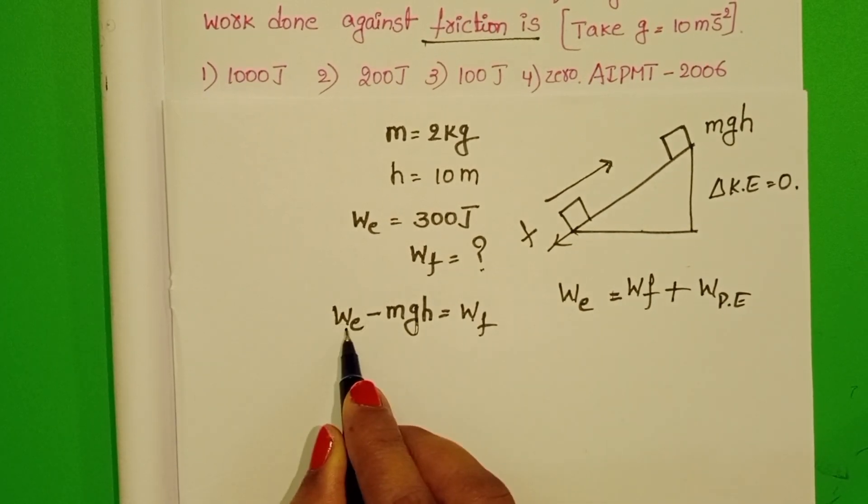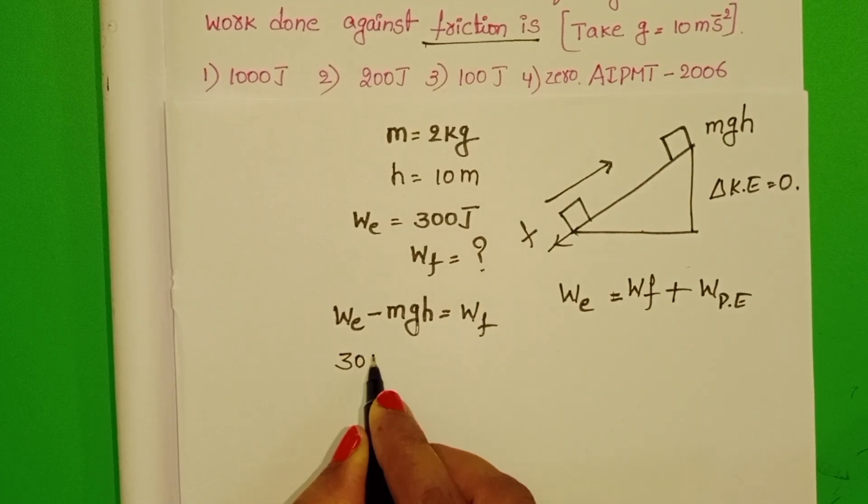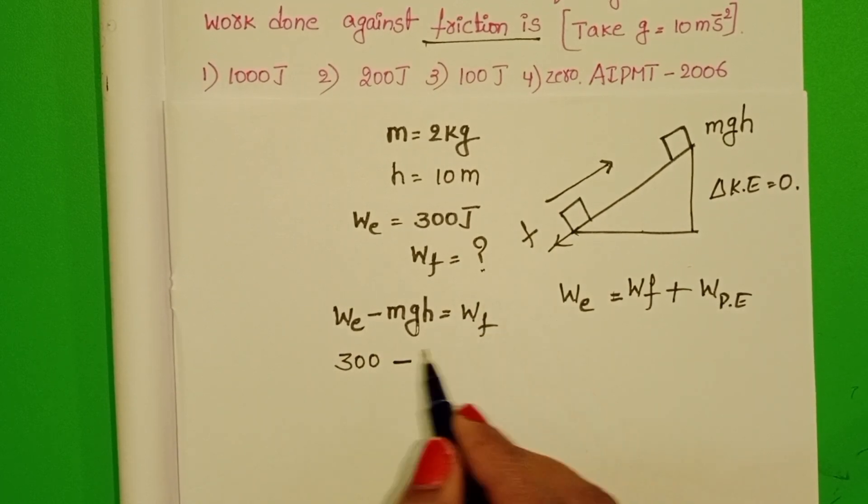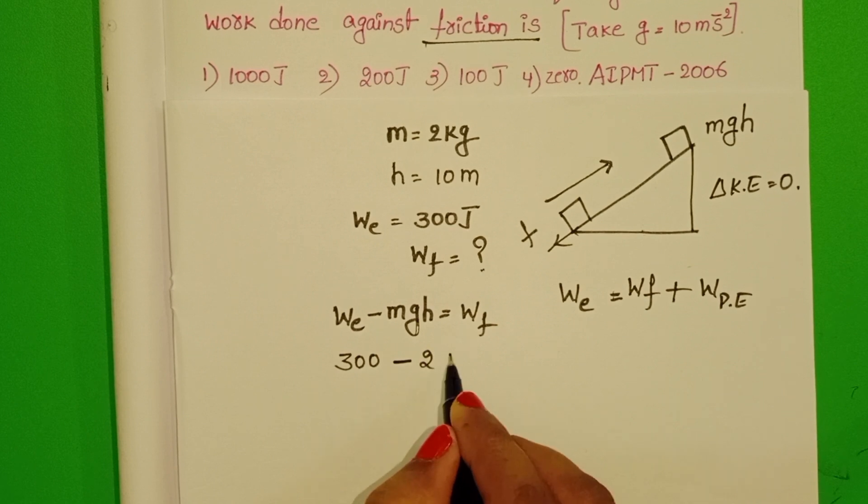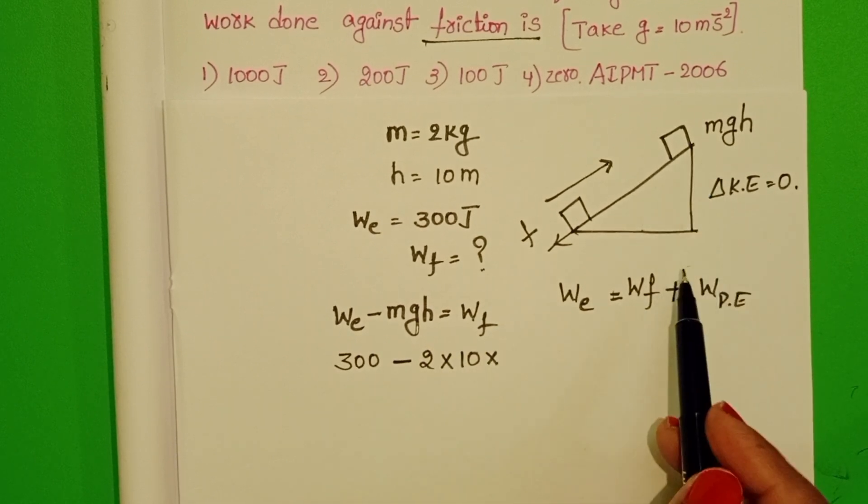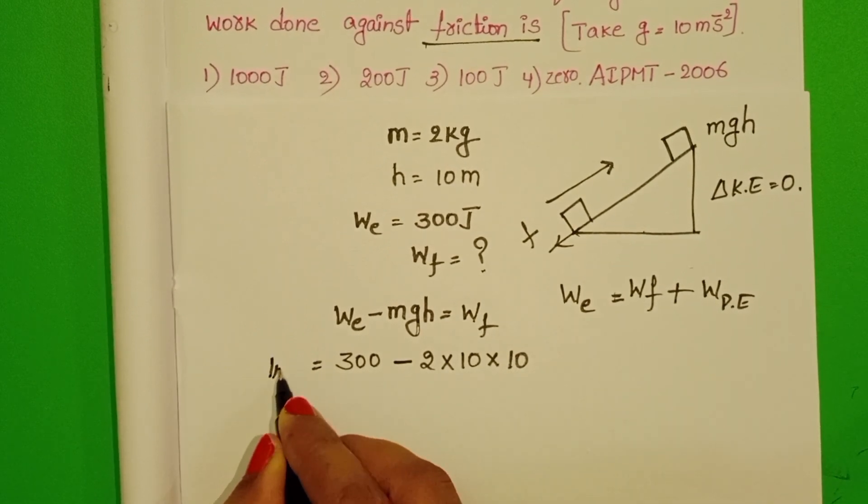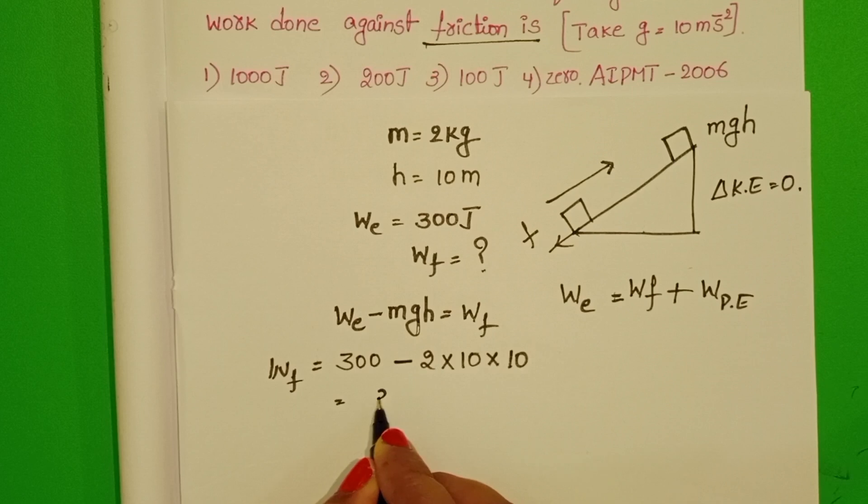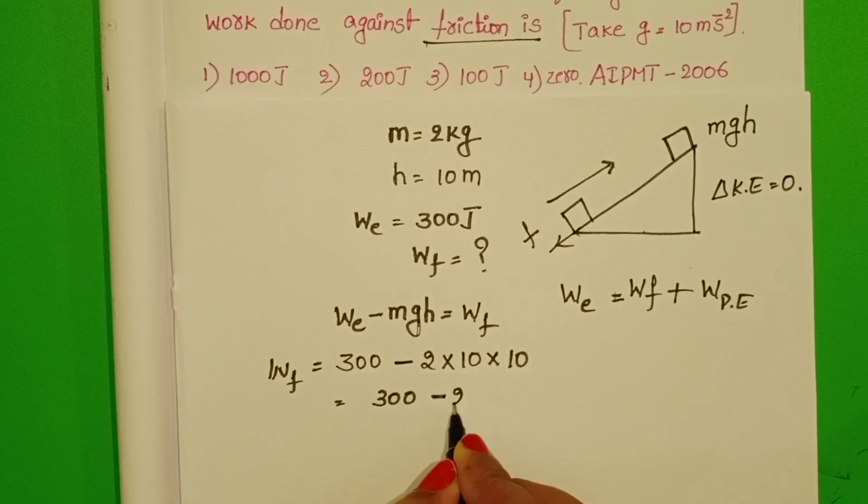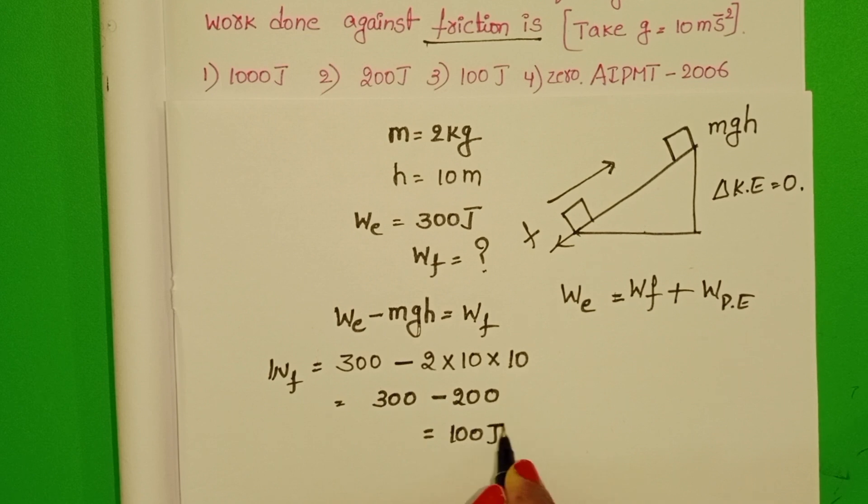Now here we know external work done, that is 300 Joules minus mass of the block is 2 kg, acceleration due to gravity 10, and height of the inclined surface is 10 meters. 300 Joules minus 200, that is equals to 100 Joules.